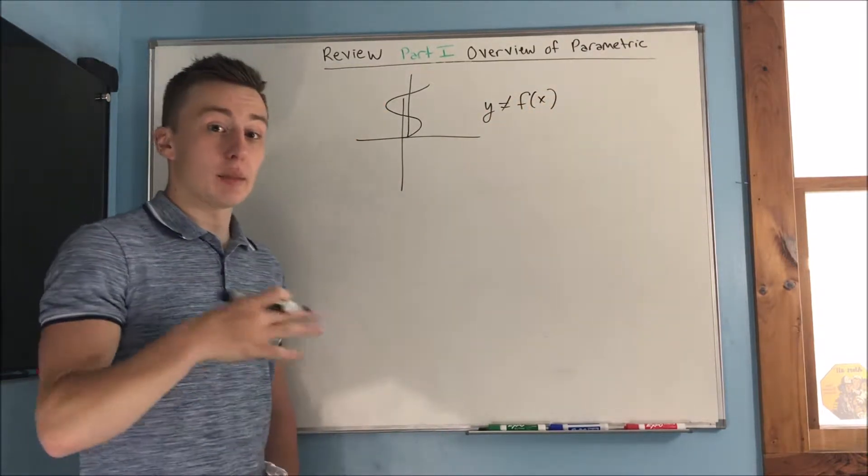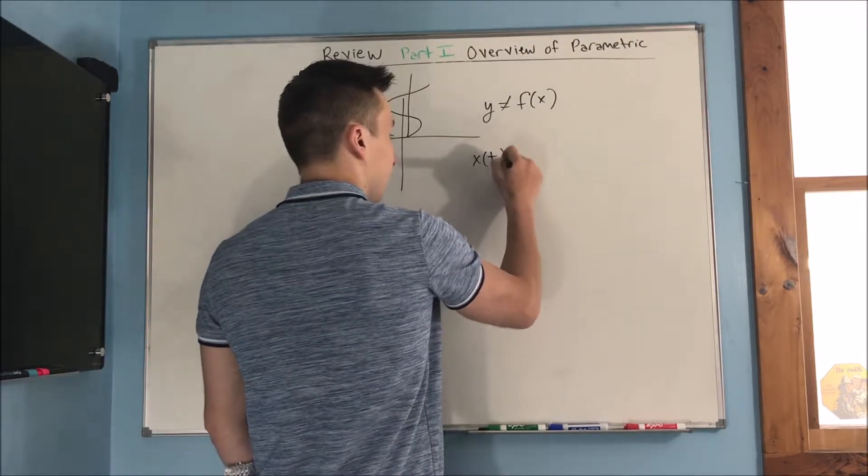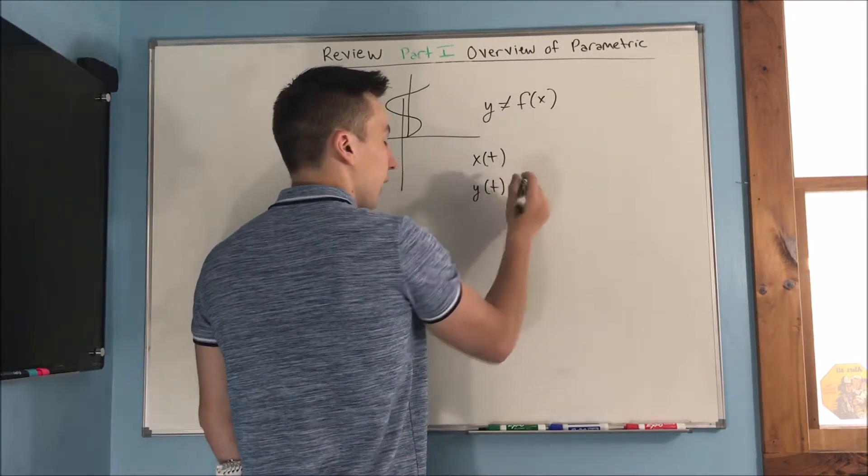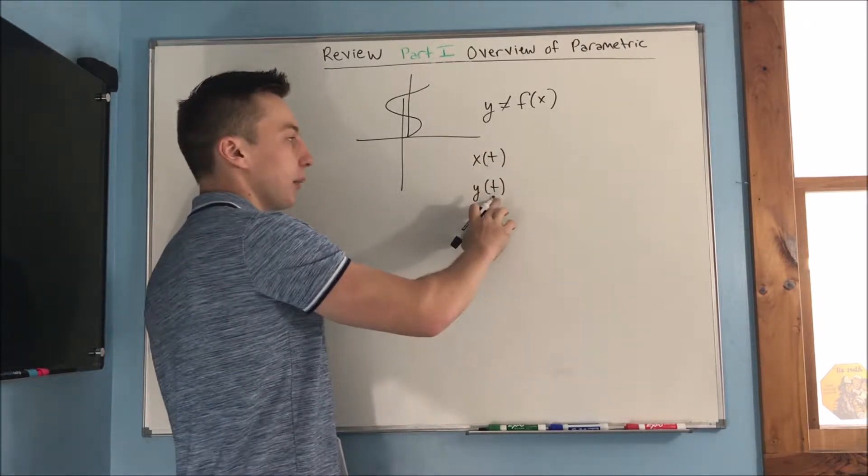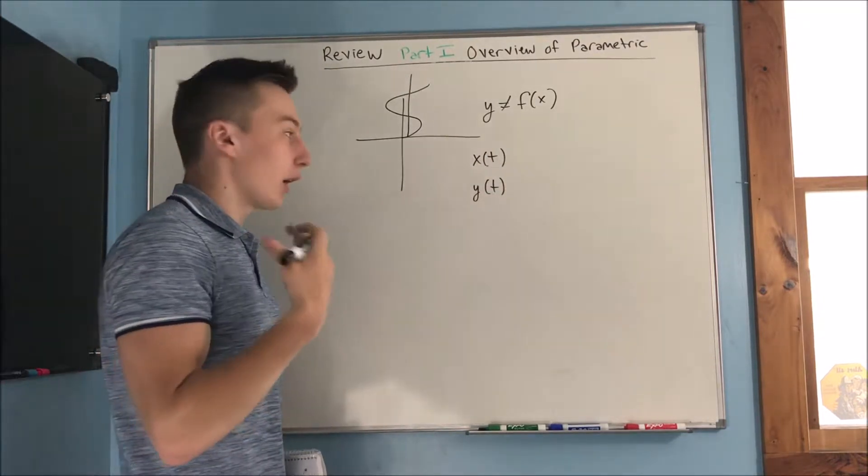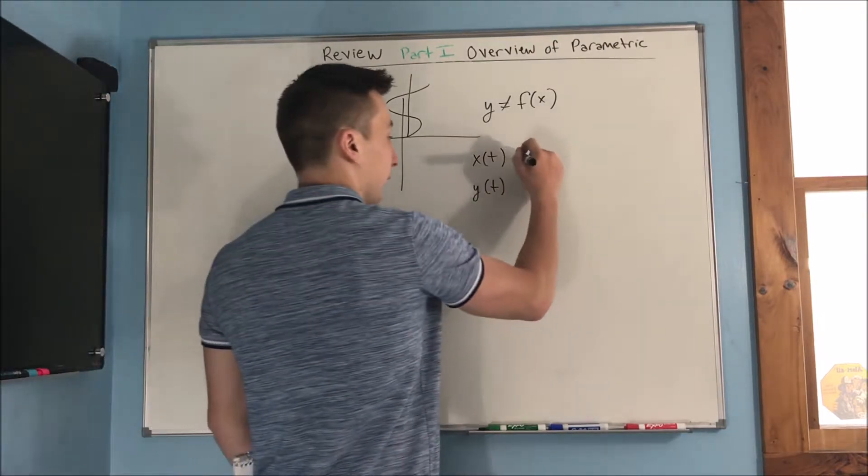So we described the motion of x and the motion of y independently with x of t and y of t, and our parameter, parametric, parameter is going to be t. This is going to be our new variable. You can kind of think of it as time.